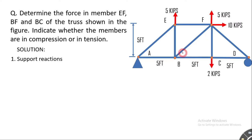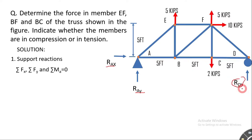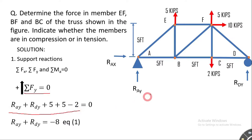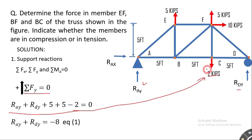The first step is to determine external reactions or support reactions: RAx, RAy, and RDy. We apply conditions of equilibrium — summation of Fx, summation of Fy, and summation of moments about a particular point equals zero. Applying ΣFy with upward forces as positive: there are five forces acting in the y-direction — RAy, RDy, two 5-kip loads, and a 2-kip force acting downward, which is negative.